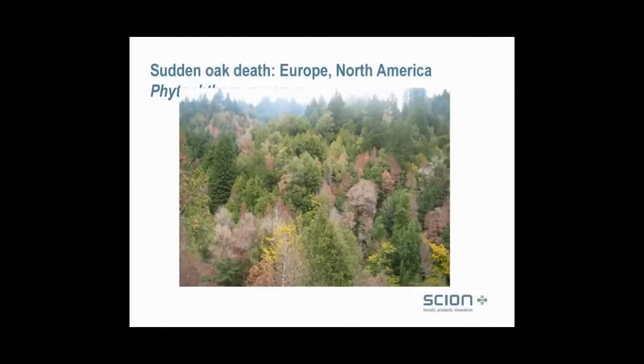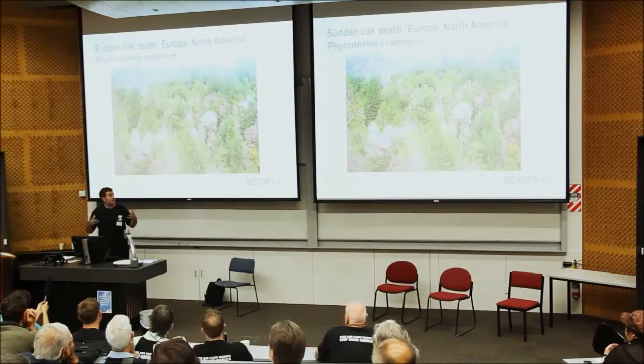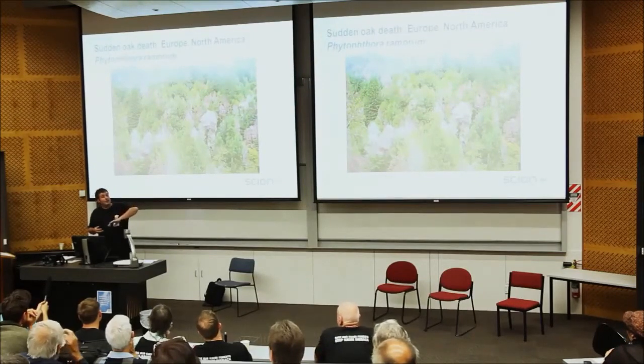It's not just in Australia. Sudden oak death, caused by the introduced foliar phytophthora species Phytophthora ramorum, is a species that floats through the air in moist, cloudy conditions. Climatic modelling indicates this phytophthora species would probably love New Zealand. It affects many hundreds — potentially thousands — of known hosts, kills many different species, and has caused the collapse of oak forests throughout America.